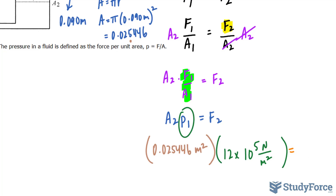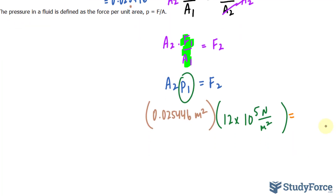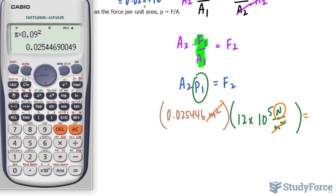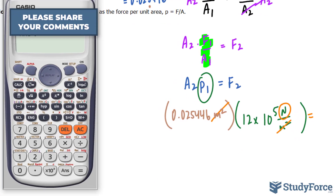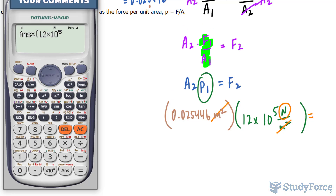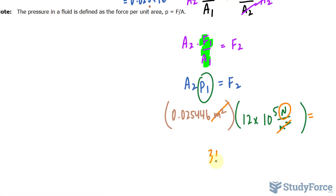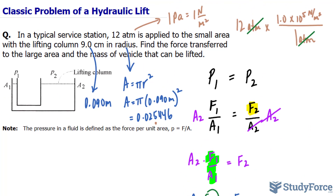This should give us the force in newtons. Notice that the meters squared units cancel out, leaving us only with newtons. So the area value times 12 times 10 to the power of 5 means that the force at F2 is 31,000 newtons, rounded to the correct number of significant figures — two significant figures.